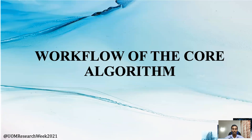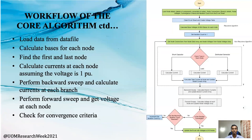Now let's take a look at the algorithms. This is an overview of the overall algorithm. First we load the data from the data file, then we calculate the basis for each node. We find the first and last node and calculate currents at each node assuming the voltage is 1 per unit. Then we perform the backward sweep and calculate currents at each branch, then perform the forward sweep and get voltages, and finally check for the convergence criteria.